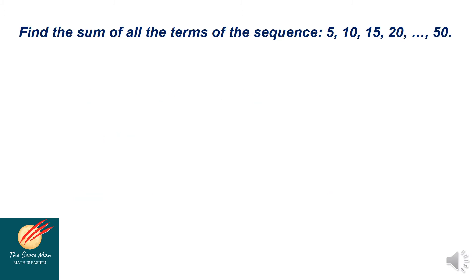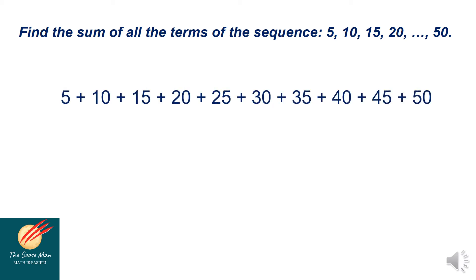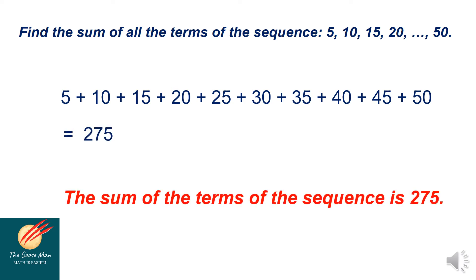Let us move on to the second example: find the sum of all terms of the sequence 5, 10, 15, 20, and so on until 50. Observe that the common difference is equal to 5. Listing down the elements: 5, 10, 15, 20, 25, 30, 35, 40, 45, 50. The sum is equal to 275. Therefore, the sum of the terms of the sequence is 275.